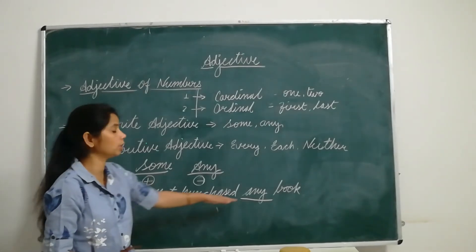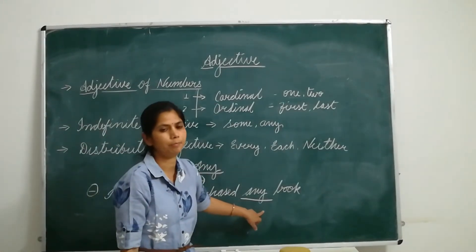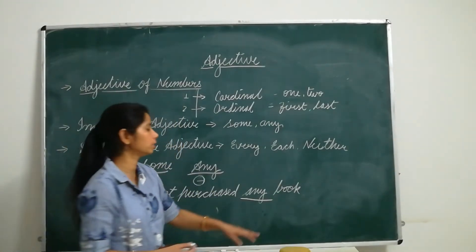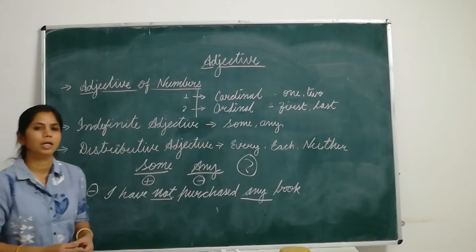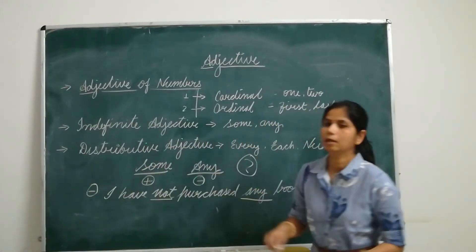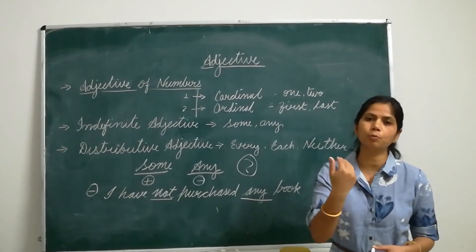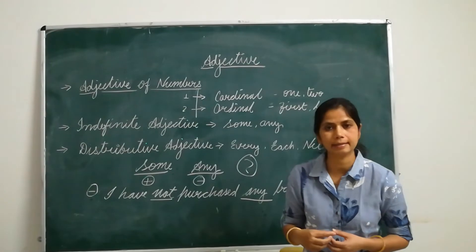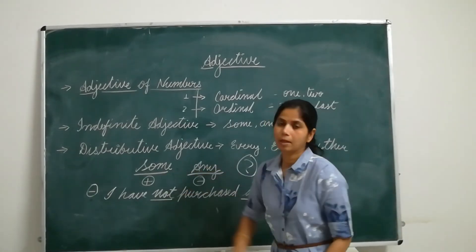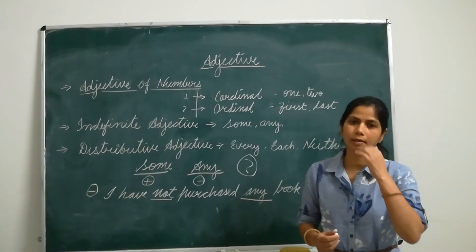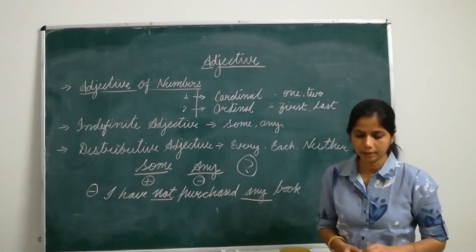What about interrogative sentences? In interrogative sentences, both 'some' and 'any' are possible. But what is the difference? When we use 'some' in an interrogative sentence, it means we are asking something and we expect the answer to be 'yes'. If you expect a positive reply, then we use 'some'. But when we expect the answer will be negative, we use 'any'.